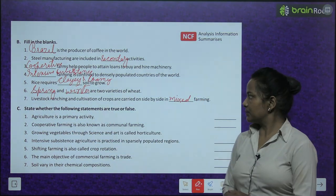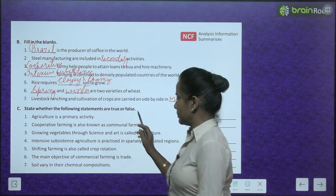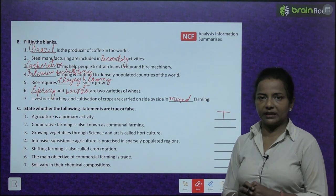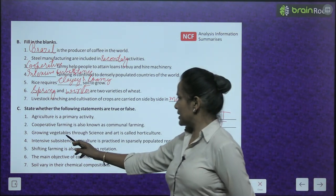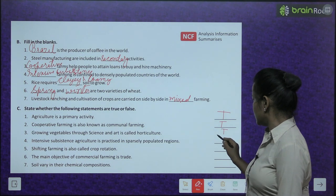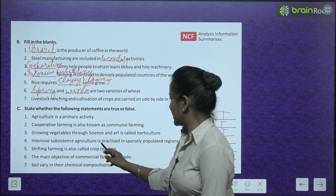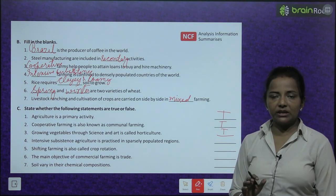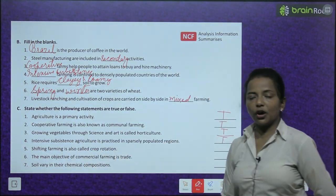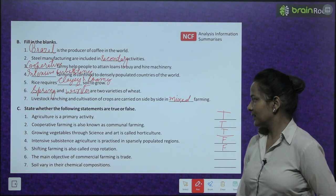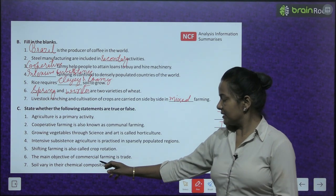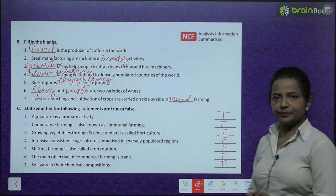State whether true or false: Agriculture is a primary activity — True. Cooperative farming is also known as communal farming — True. Growing vegetables through science and art is called horticulture — True. Intensive subsistence agriculture is practiced in sparsely populated regions — False, it is practiced in densely populated regions. Shifting farming is also called crop rotation — False. The main objective of commercial farming is trade — True. Soil varies in its chemical composition — True.